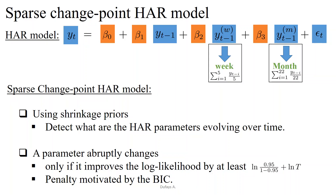Due to the shrinkage prior that we use, a breakpoint in a parameter is detected if and only if it increases the log likelihood function by a specific amount. This amount is motivated in the paper by the Bayesian information criterion and the marginal likelihood.